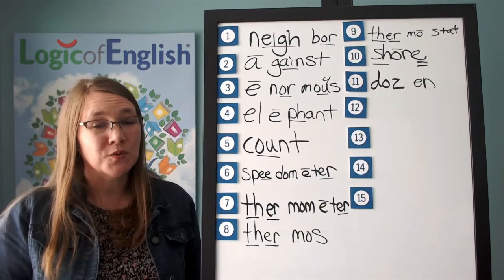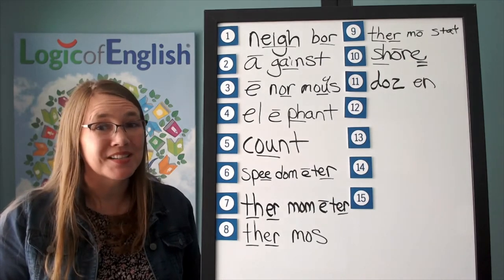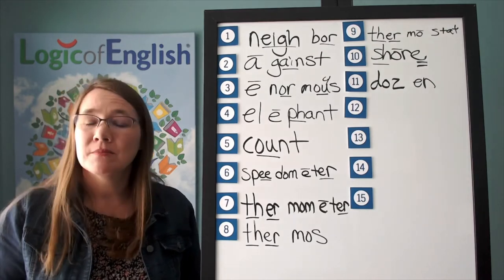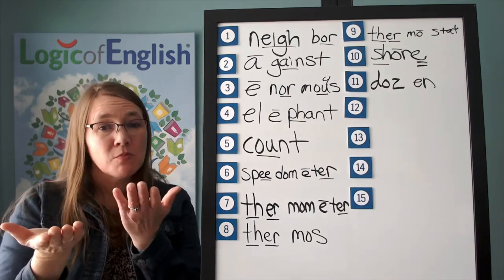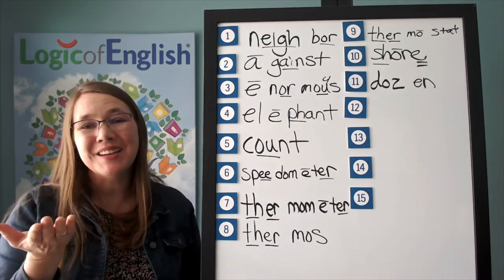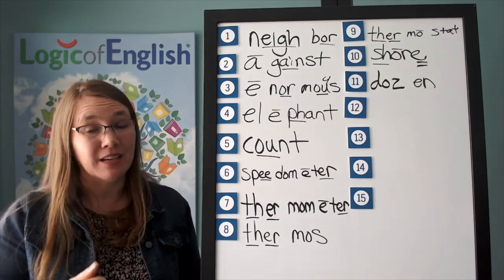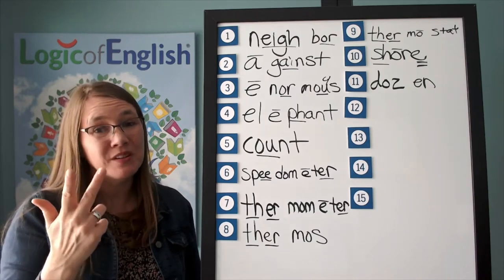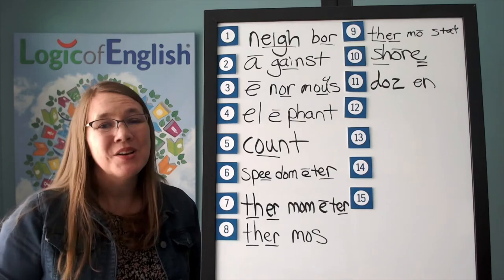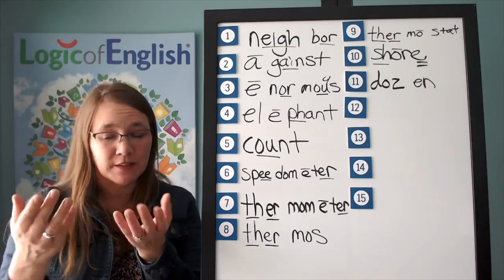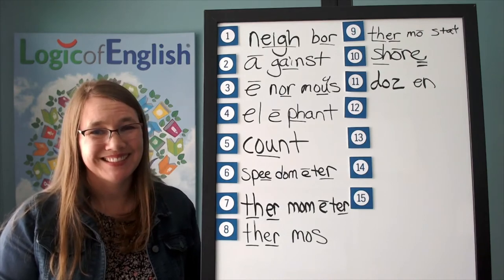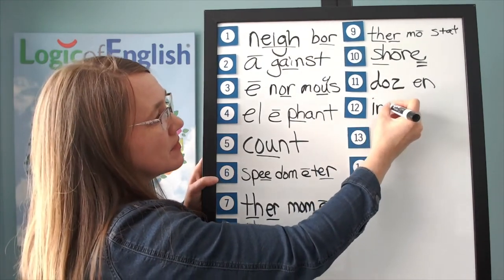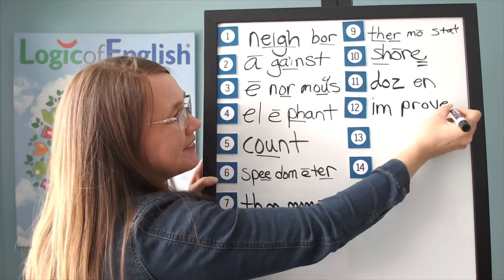The next word is improve. How can we improve the course? Go ahead and say improve. How many syllables? Two. We will say to spell IMPROVE. Let's sound it out: first syllable IM; second syllable PROVE — P, R, U, use an A-O-U, V, silent final E. Go ahead and write IMPROVE. Help me write it: IM; P, R, U, silent final E.